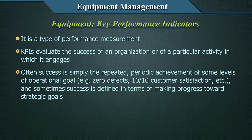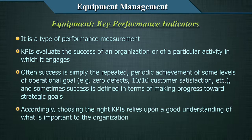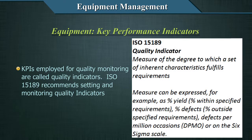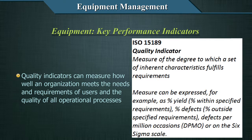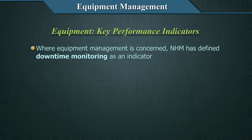Examples of operational goals include zero defects or 10/10 customer satisfaction. Sometimes success is defined in terms of making progress towards strategic goals. Choosing the right KPIs relies upon a good understanding of what is important to the organization. KPIs employed for quality monitoring are called quality indicators. ISO 15189 recommends setting and monitoring quality indicators, which can measure how well an organization meets the needs of users and the quality of all operational processes.